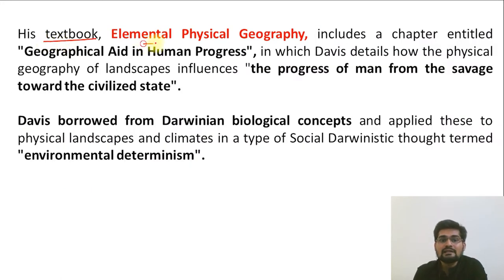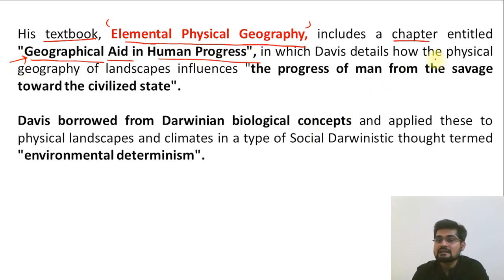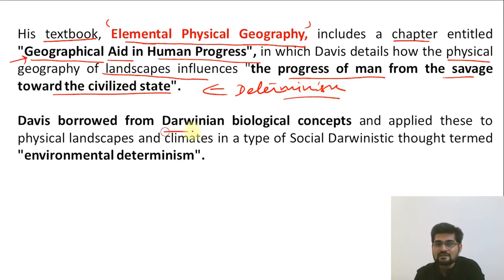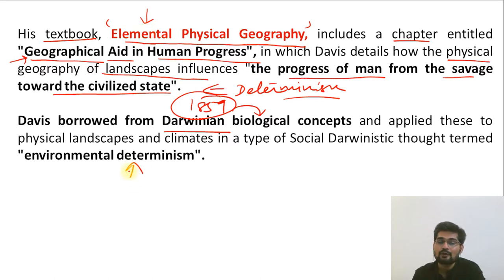Furthermore, his textbook Elemental Physical Geography includes a chapter entitled 'Geographical Aid in Human Progress,' in which he discussed how the physical geography of landscapes influences the progress of man from the savage towards the civilized state. We largely see the concept of determinism in his ideas, coming from Darwinian thought that emerged in 1859. Davis's work was of the same line of thought: that the progress of human beings is dependent upon physical nature — nature determines.